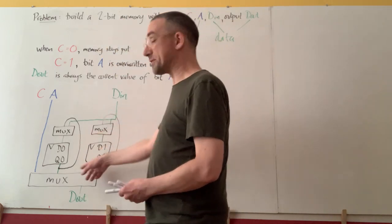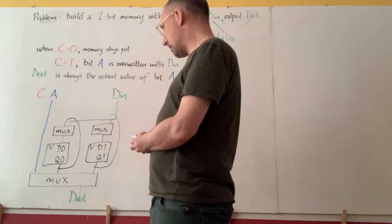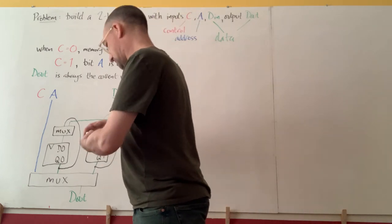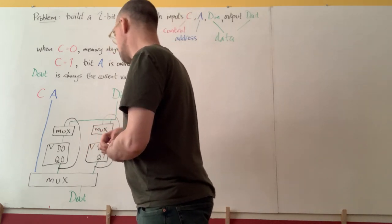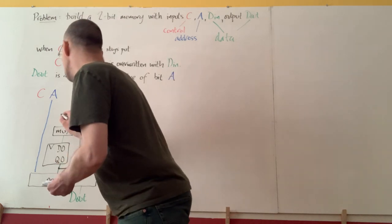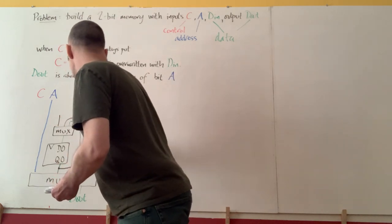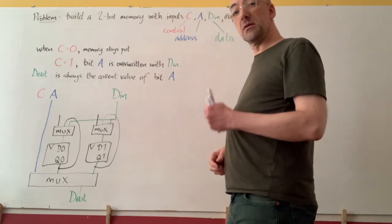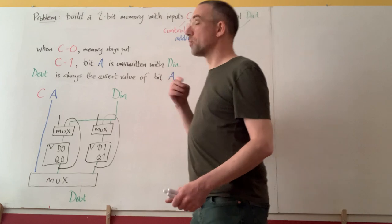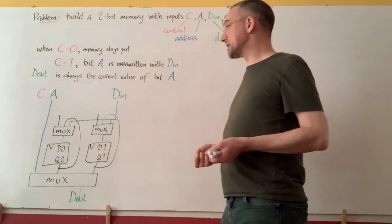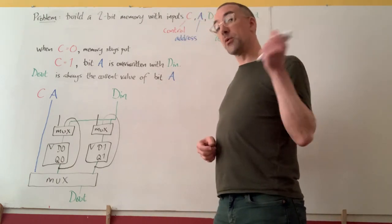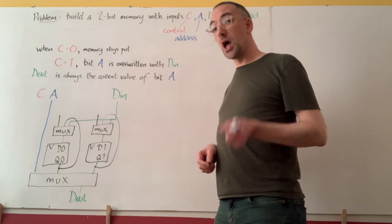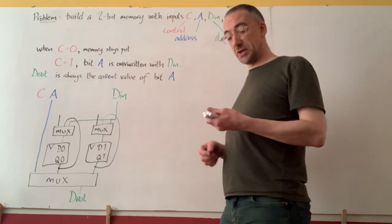So our feedback loops allow memory to stay the same. And then we have to ask, what on earth is making the decisions about which to do? Well, first of all, we can straightforwardly say that whenever we're doing a memory read, we're not changing anything.